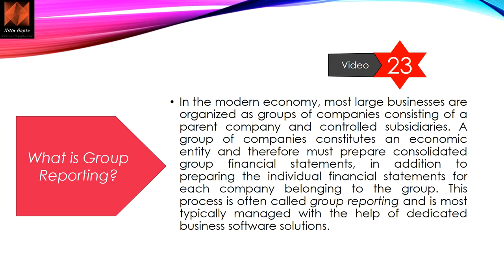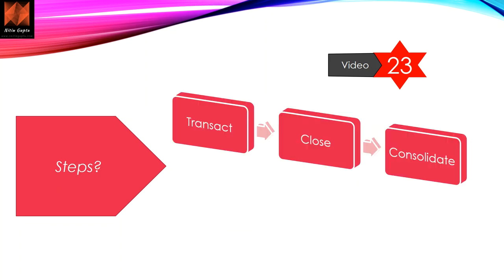You prepare financial statements at the country level, region level, and then the global level. The steps are: you transact, you close, and you consolidate. First you do normal transactions — purchases, sales, asset accounting, and other business transactions. Then you do month-end closing, and at the end you do consolidation. Once every entity in the group closes their books at month-end, the consolidation process can start. If any entity is delayed in closing, the consolidation process gets delayed.